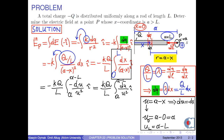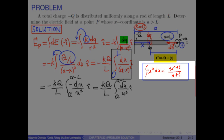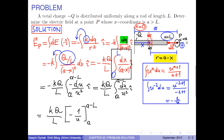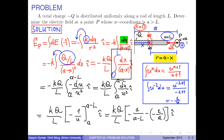Or simply, k times Q over L times the integral of du over u squared, î-hat, with limits a and a minus L. Here we can use the power rule: the integral of u to the nth power is u to the (n+1) over (n+1). In our example, we write the integral as u to the negative 2 du, so the integral becomes negative 1 over u. Therefore, the electric field becomes k times Q over L times (negative 1 over u), î-hat. Substituting the limits, we obtain k times Q over L times (negative 1 over (A minus L) minus (negative 1 over A)), î-hat.